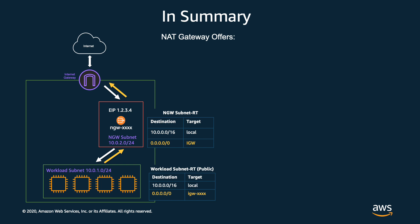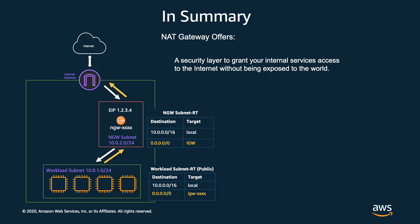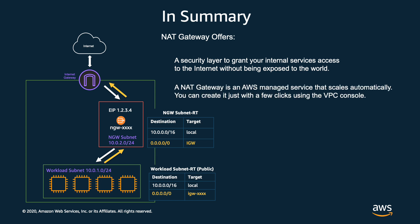In summary, the NAT gateway offers a security layer to grant your internal services access to the internet without being exposed to the world. The NAT gateway is an AWS managed service that scales automatically. You can create it with just a few clicks from the VPC console.